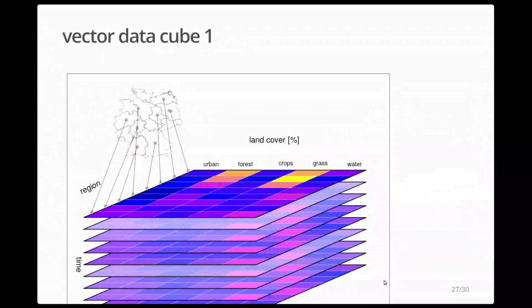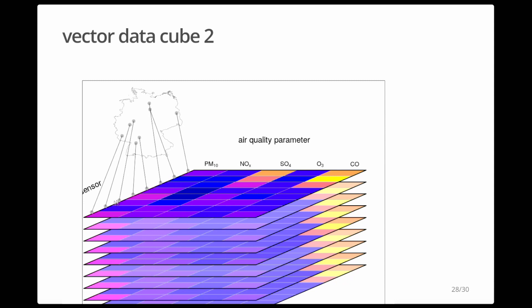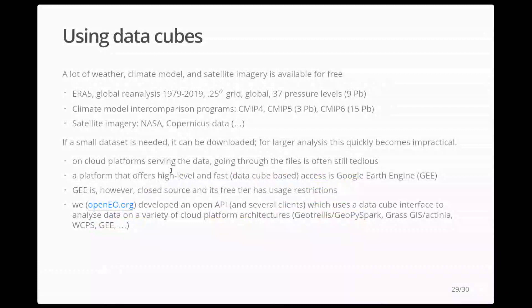Vector data cubes are similar — also cubes — but one dimension identifies which region we're talking about. For those regions you might have land-cover types over time, or monitoring stations. Space takes up one dimension rather than two as in raster data. For using data cubes, there are incredible amounts of freely available weather, climate-model, and satellite-imagery data — for instance ERA5, a global reanalysis dataset at 0.25-degree grid resolution with 37 pressure levels, totaling about 9 petabytes.